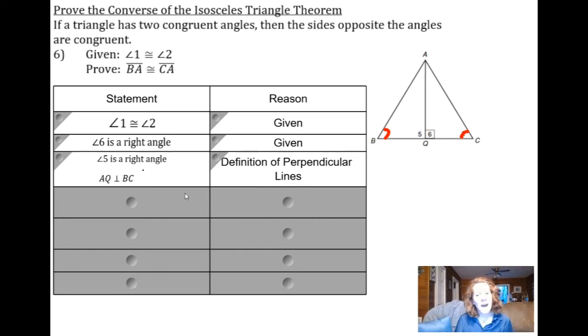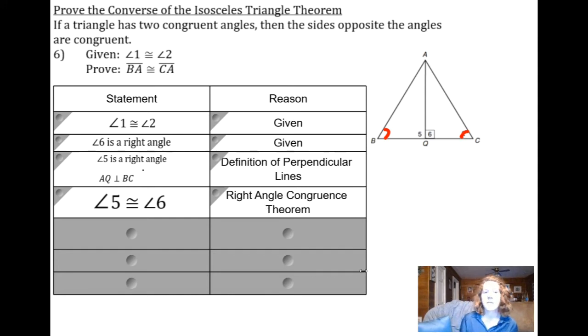Now I have two right angles, angle 6 and angle 5. I'm going to bring in that good old right angle congruence theorem and say angle 5 is congruent to angle 6 because of the right angle congruence theorem. So there's another piece of information that I can mark. I've got two right angles here, angle 5 and angle 6.